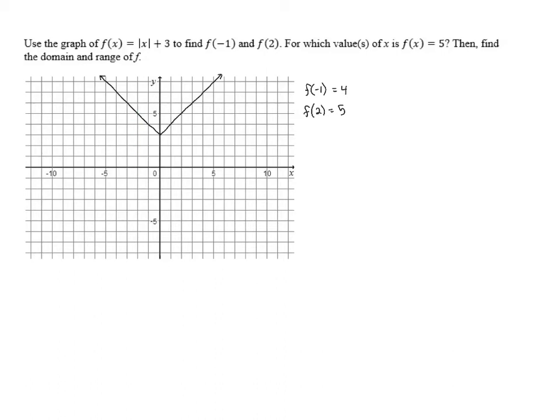The other one is here, and that occurs when x equals negative 2. So the two values where f of x equals 5 occur when x equals 2 and x equals negative 2. So we can say f of x equals 5 when x equals 2 or x equals negative 2.